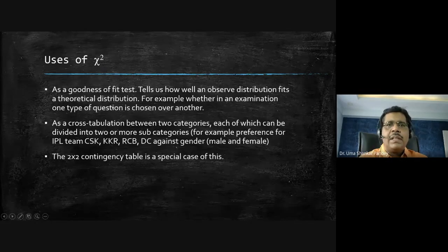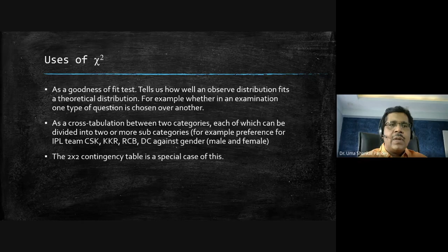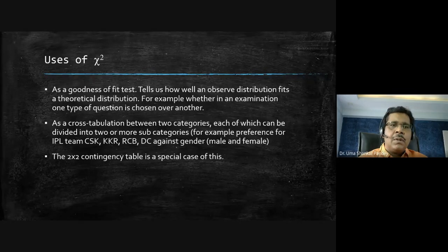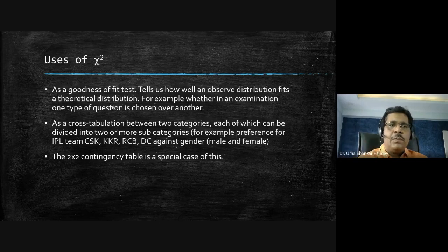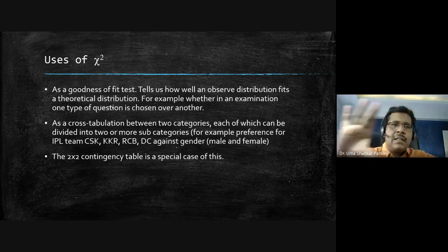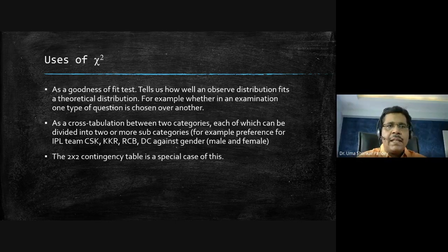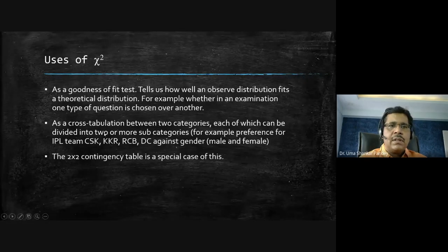There are two uses: first, finding out whether observed frequency matches expected frequency; second, cross-tabulation between two categories — for example, IPL team preference (CSK, KKR, RCB, DC) according to gender. This is placed in a contingency table. A special case is the 2×2 contingency table.